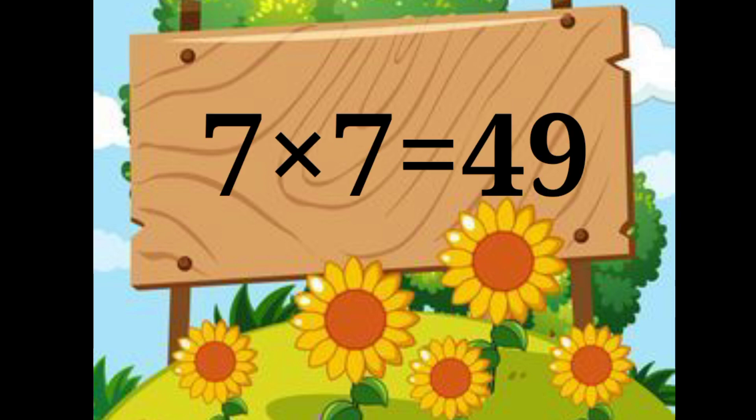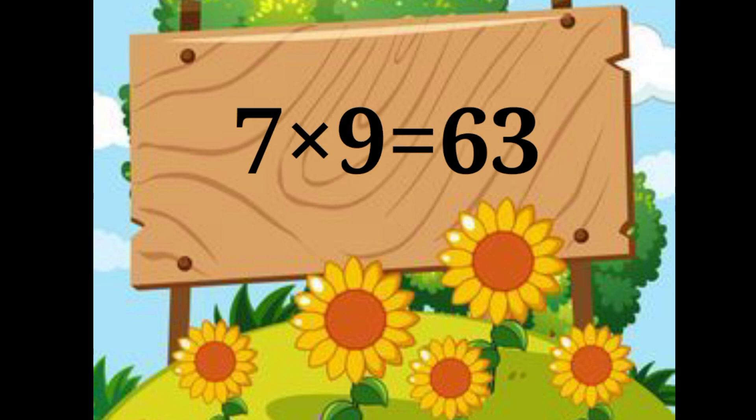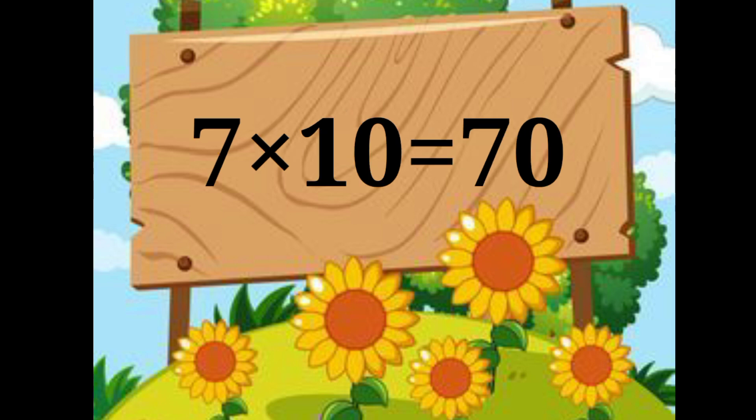7 ones are 7. 7 twos are 14. 7 threes are 21. 7 fours are 28. 7 fives are 35. 7 sixes are 42. 7 sevens are 49. 7 eights are 56. 7 nines are 63. 7 tens are 70.